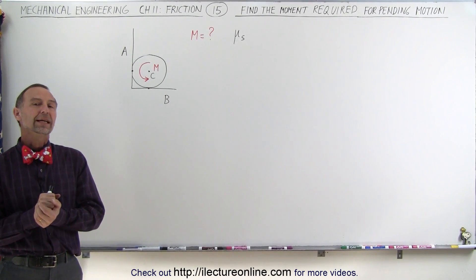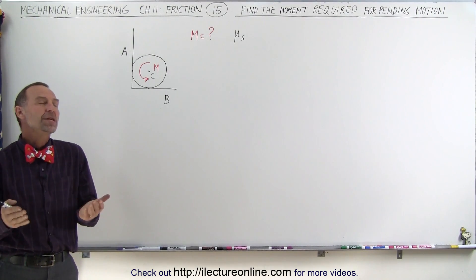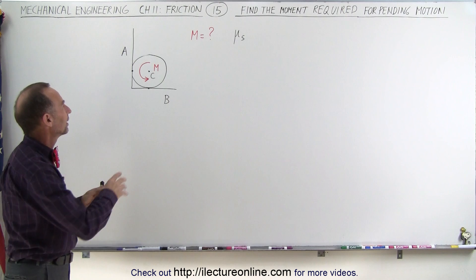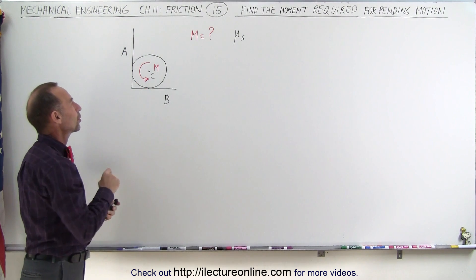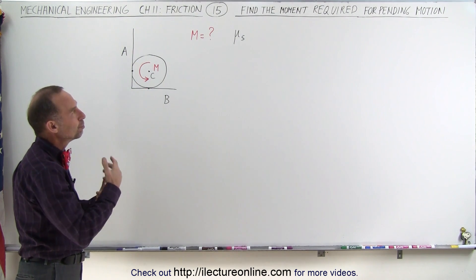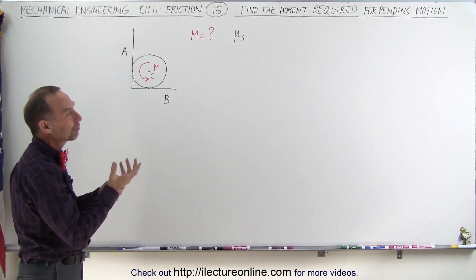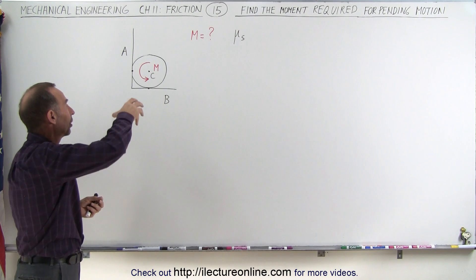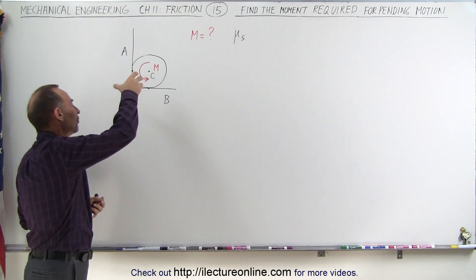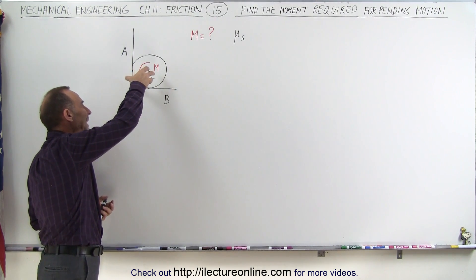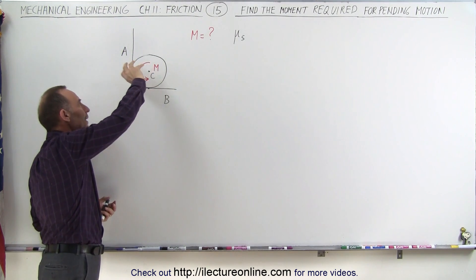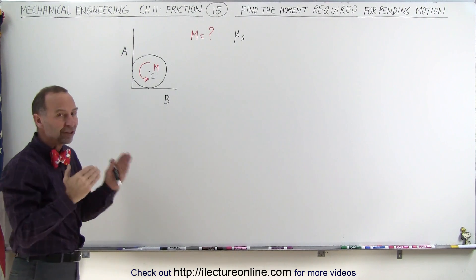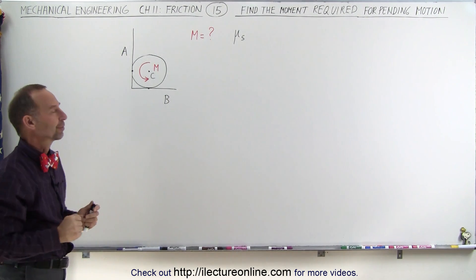Welcome to Electron Line. Let's assume we have a cylinder sitting in a corner and we're trying to find the moment required for impending motion — in other words, having sufficient moment to almost begin turning that cylinder, with only friction keeping it from turning.